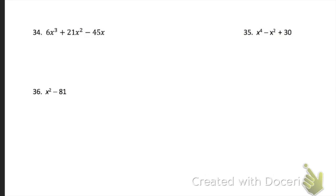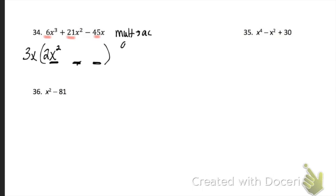Problem 34 — start with a greatest common factor. Notice that 6, 21, and 45 can all be divided by 3, and there's an X in each term, so you can pull a 3x out front. After pulling out 3x, write what's left — you'll have something with x², something with x, and something without x. You'll have a 2x² here, so factor by grouping: find what multiplies to AC and adds to B, rewrite the middle term, group the first two and last two, and pull out a GCF.